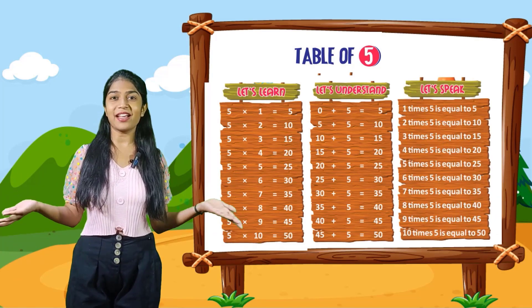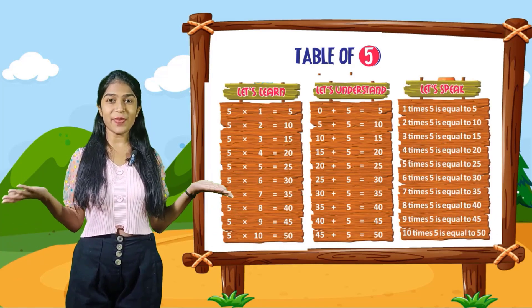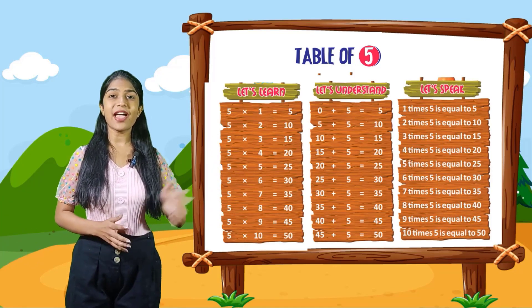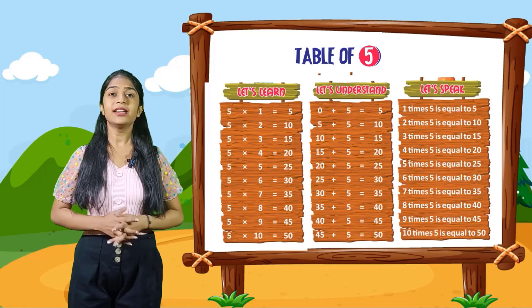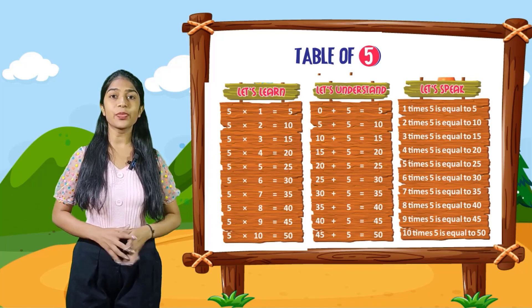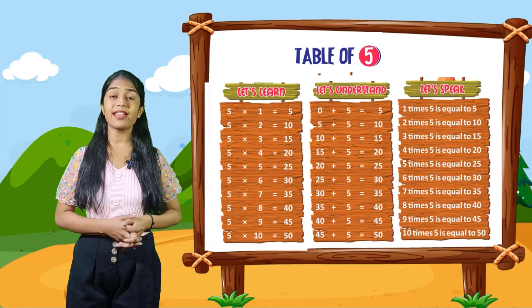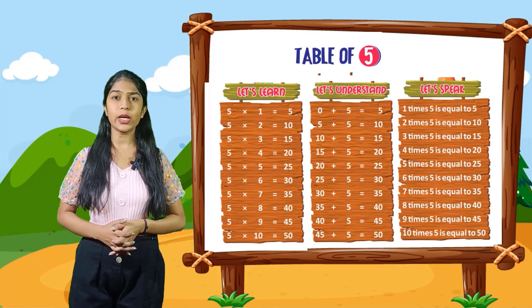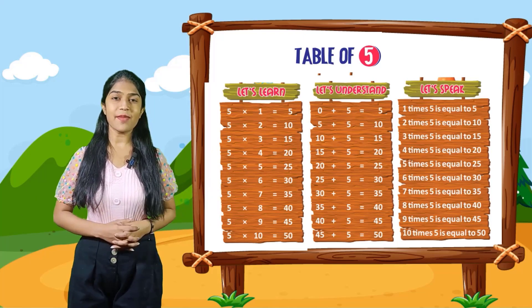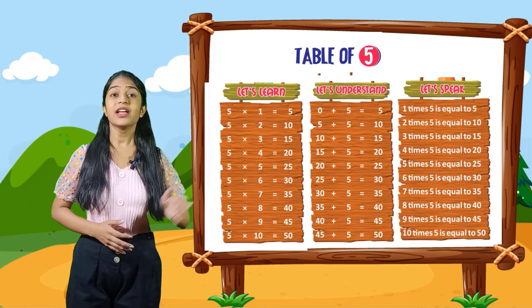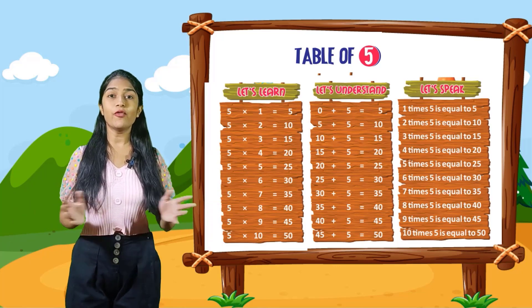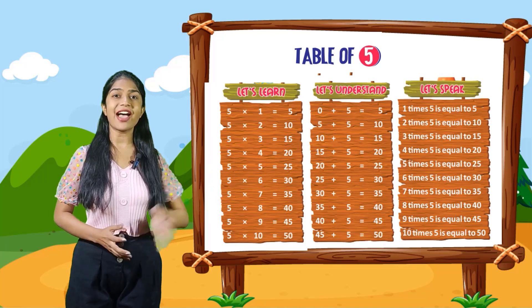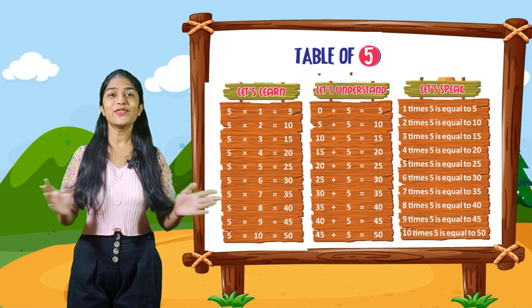Now let's speak. You have to speak with me. 1 times 5 is equal to 5. 2 times 5 is equal to 10. 3 times 5 is equal to 15. 4 times 5 is equal to 20. 6 times 5 is equal to 30. 7 times 5 is equal to 35. 8 times 5 is equal to 40. 9 times 5 is equal to 45. 10 times 5 is equal to 50.